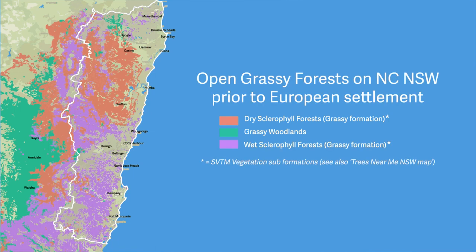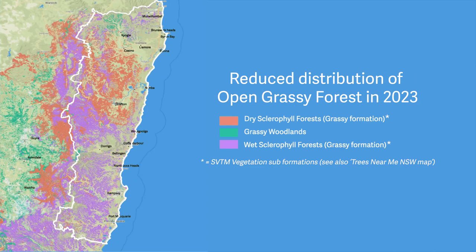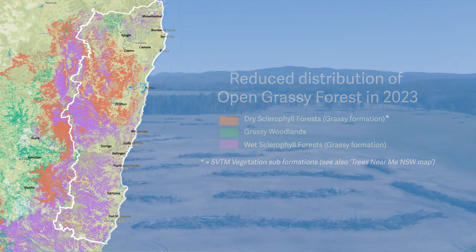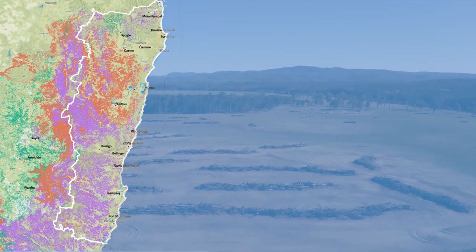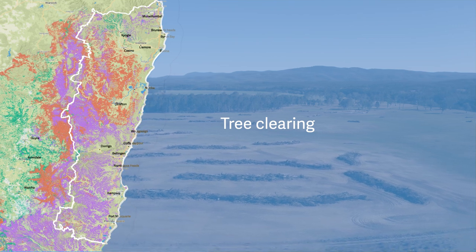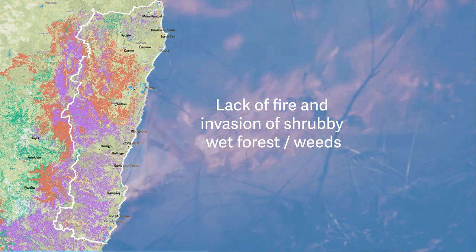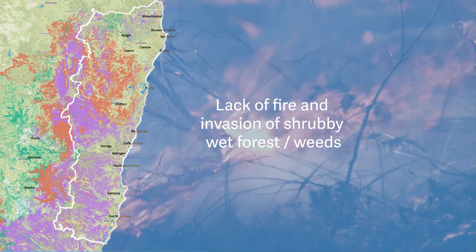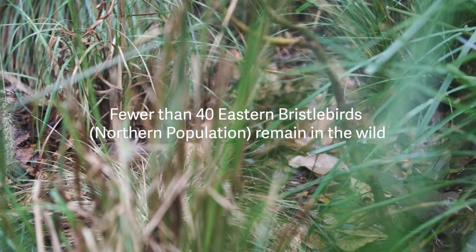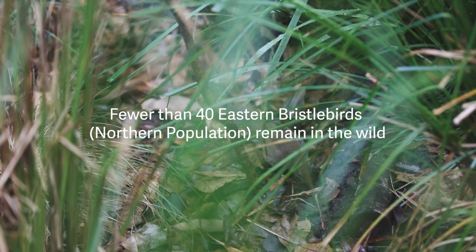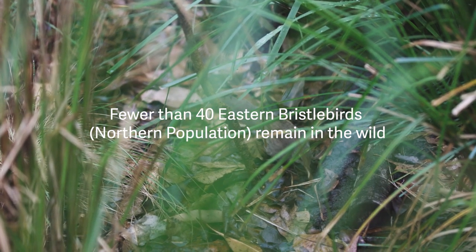This map shows the extent of open grassy forests on the north coast of New South Wales prior to European settlement. But when we overlay modern distribution maps of open grassy forests, you can see that vast swaths have been cleared by tree felling, or have re-afforested and closed in due to a lack of fire in the landscape. These modern changes mean there is less suitable habitat for the animals that require open grassy forests for protection, feeding and nesting.